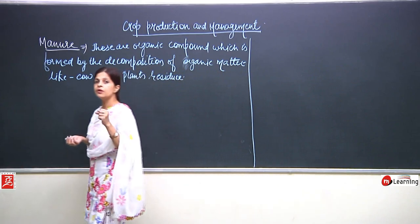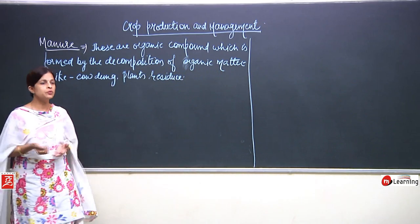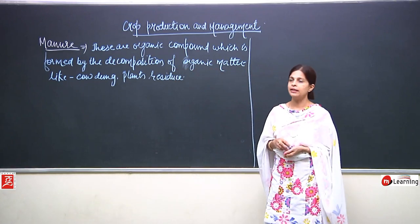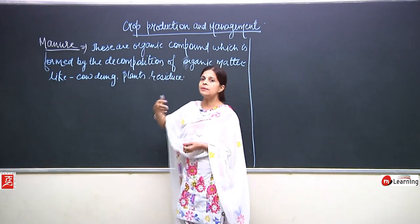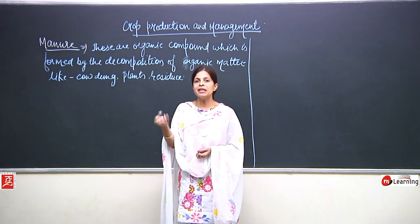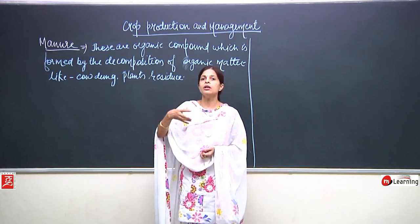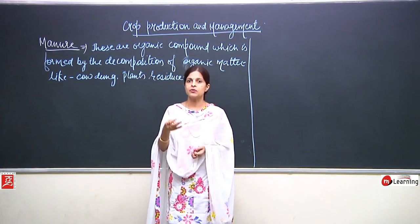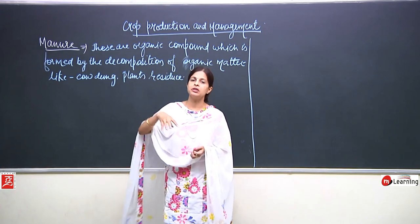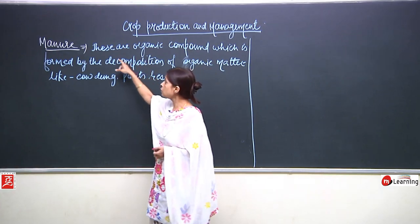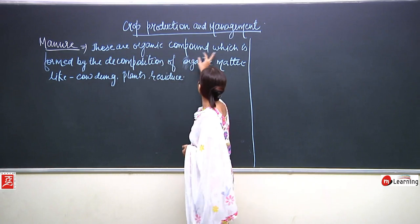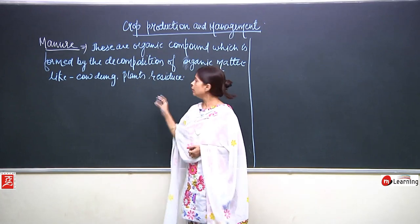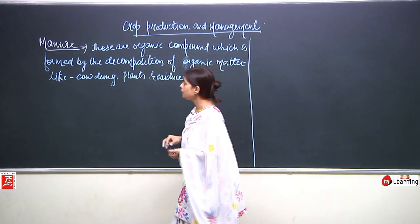This manure is very important and useful for the soil. Why should we use it? This manure keeps on bringing important nutrients like nitrogen and phosphorus back into the soil. Manure is made up of organic compounds formed by the decomposition of organic matter like cow dung, plants, and plant residues.